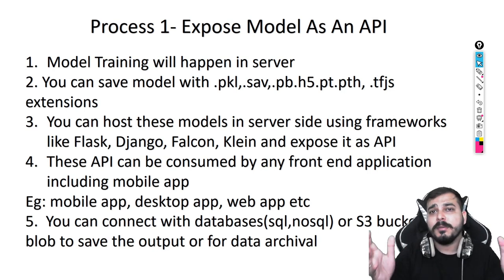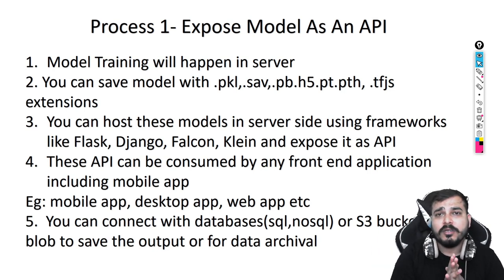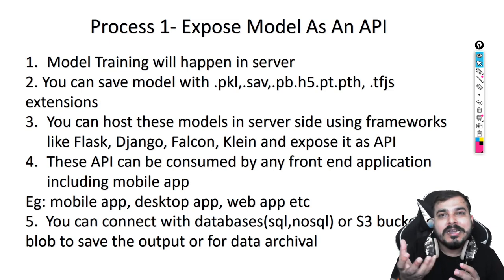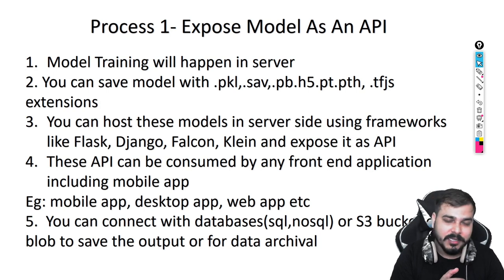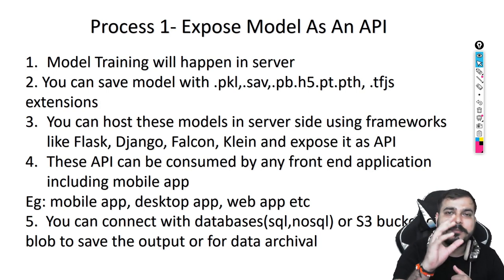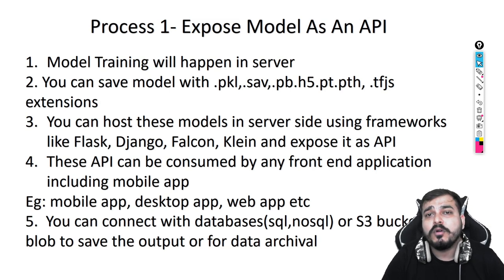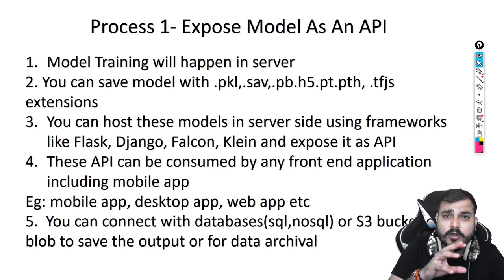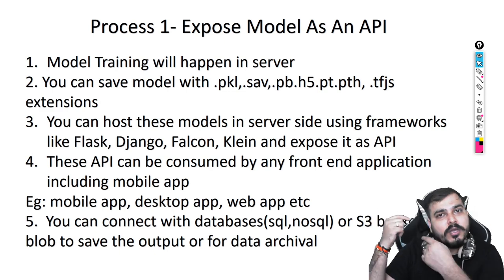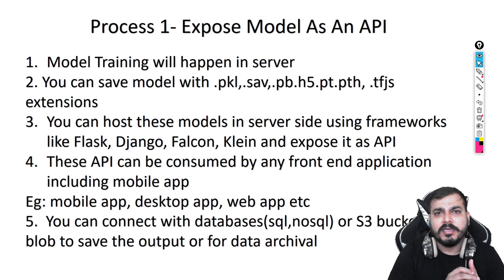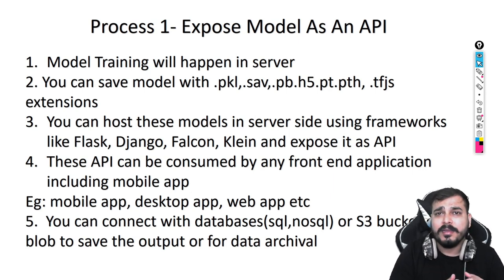In part two I'll be discussing all possible deployment architectures for a specific ML or deep learning model, because sometimes you also need to deploy that model into a mobile phone. Coming to process one: in process one we are going to expose this model as an API. We are going to deploy this particular model into the cloud and then expose it as an API to any front-end application — the front-end application may be a mobile app, web app, or desktop app.